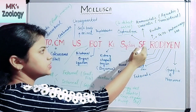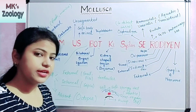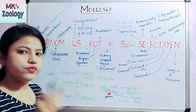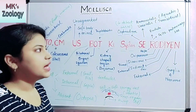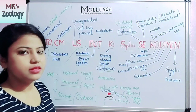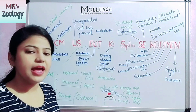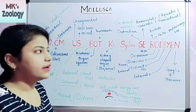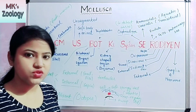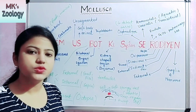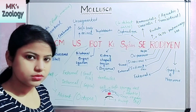The next is the excretory system. The excretory organ is Bojanus, which is of kidney type. In the excretory system, most aquatic animals are ammonotelic — they secrete ammonia as waste product. And the terrestrial animals are ureotelic — they secrete urea as their waste product.